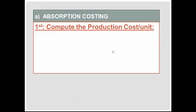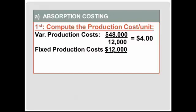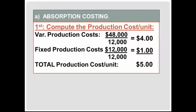Recall that under absorption costing, we'll include all production costs, both variable and fixed. The variable production costs were given to be $48,000. This includes, by definition, direct materials used, direct labor, and variable overhead. This $48,000 of cost was incurred to produce 12,000 units, so the variable production cost per unit is $4. Fixed production costs were given to be $12,000, incurred to produce 12,000 units, so the fixed production cost per unit is $1. The total production cost per unit will include both the variable and fixed components and is $5 per unit.